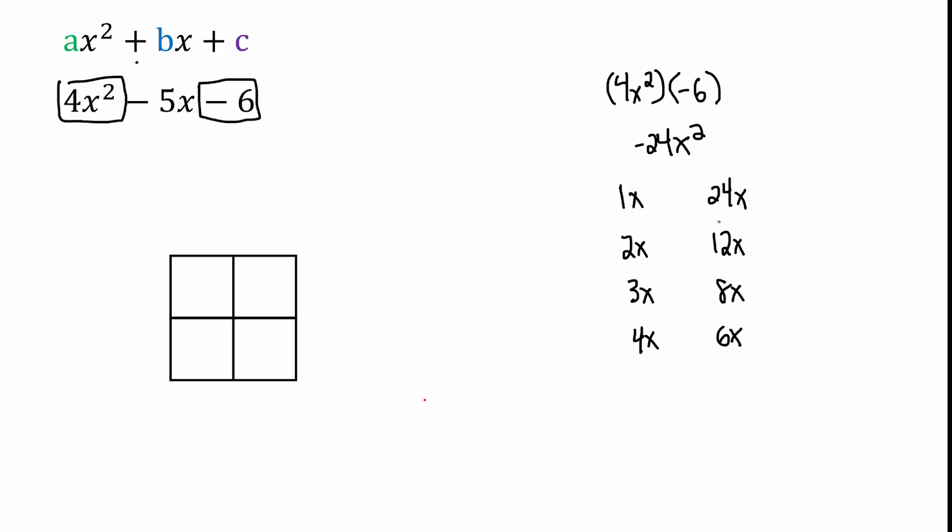So these pairs have to add up to be negative 5. Whichever pair adds up to be negative 5, that's the pair that we want to go with. Because it's a negative number here, we want to make the bigger of the two numbers negative, so that when we combine these two terms it'll end up being a negative number. So 1x plus negative 24x is going to be negative 23x, and then 2x plus negative 12x is negative 10x. And then 3x plus negative 8x is negative 5x. And that's the number that we want because our middle term right here, our linear term, is negative 5.